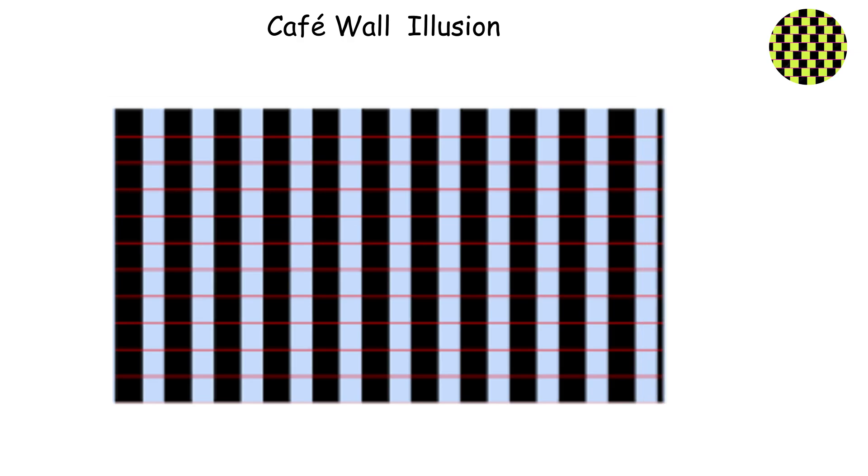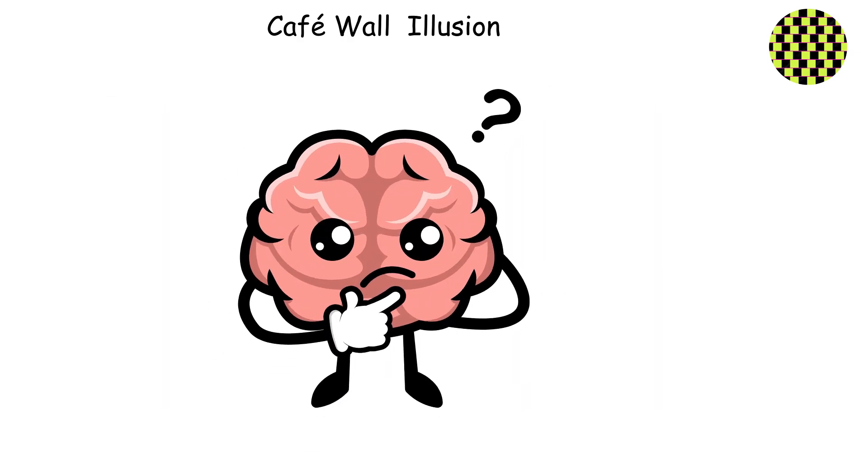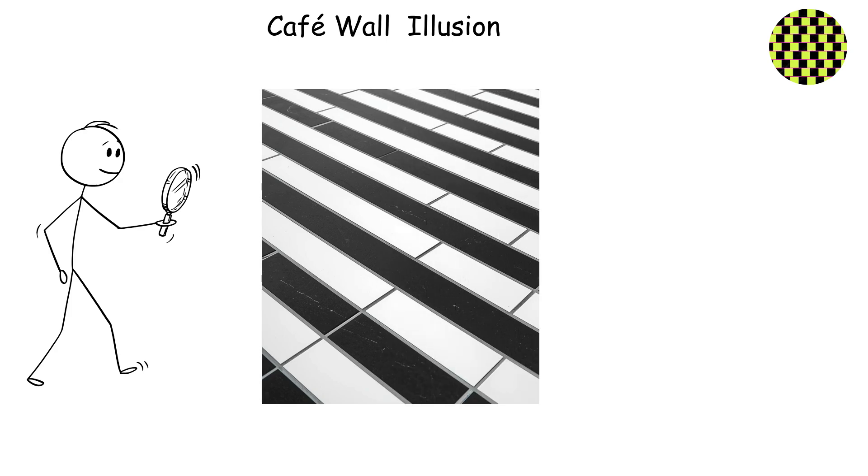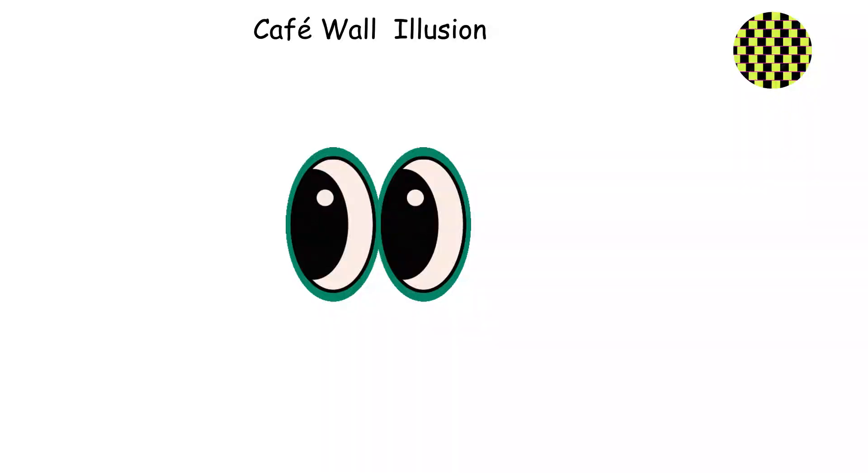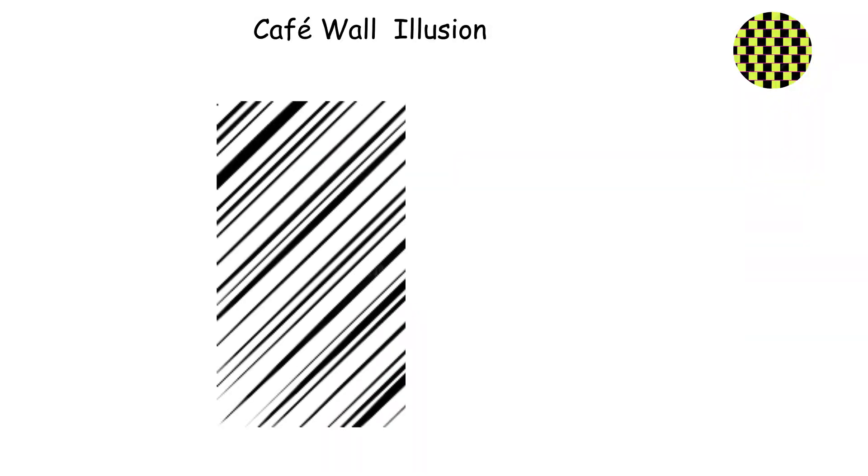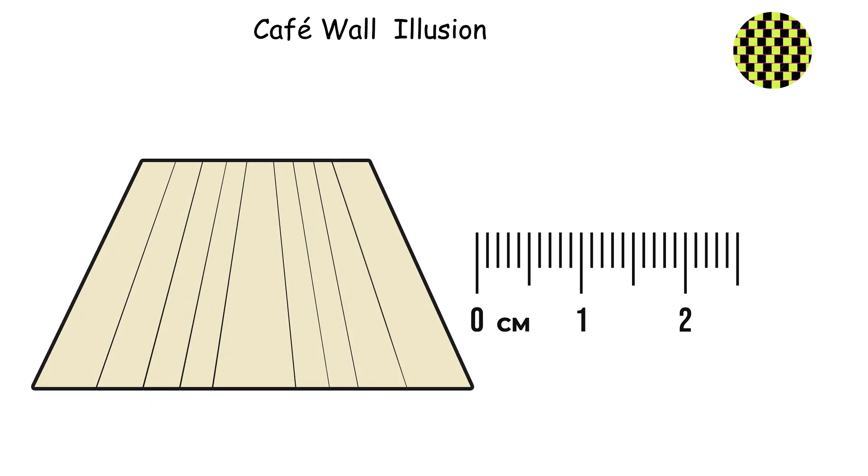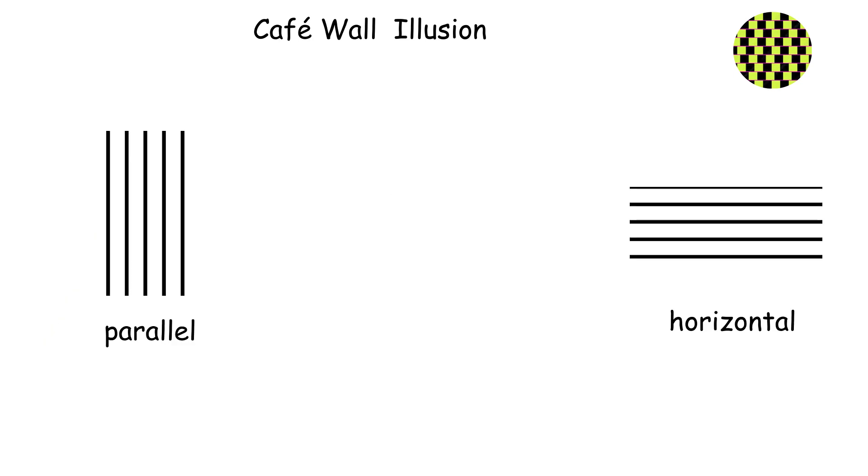That's exactly what the Café Wall Illusion does to your brain. You're looking at a pattern of staggered black and white tiles with gray mortar lines between them, and those mortar lines look like they're slanting and alternating directions. Your eyes swear the lines are tilted, but if you grab a straight edge, you'll see they're completely parallel and horizontal.